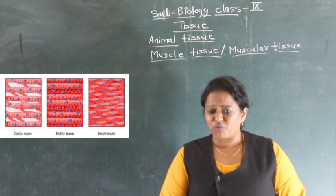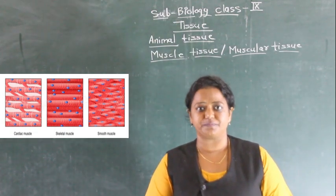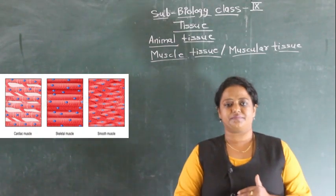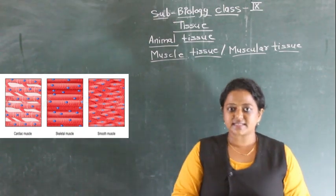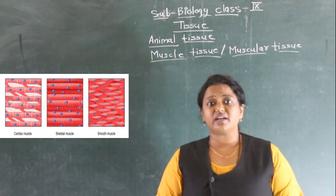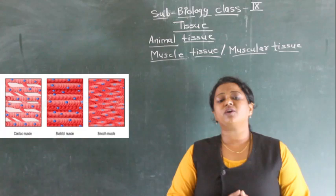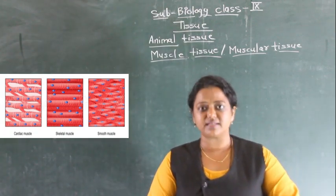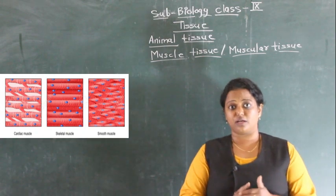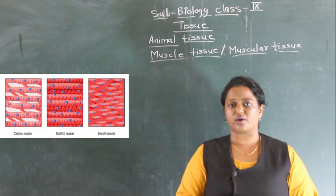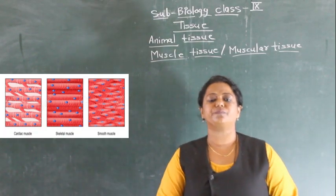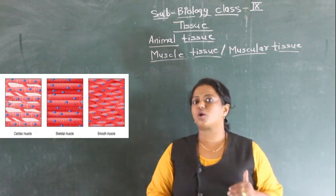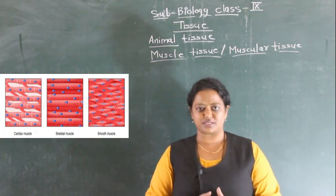Why do we require muscular tissue in our body? Our whole body is made with a skeleton, and the skeletal system is attached with a muscular system. They work together for the movement of the body. Every living organism shows various kinds of movement and locomotion. Living organisms are divided into two groups — plants and animals. Animals show locomotion, but plants do not show locomotion.